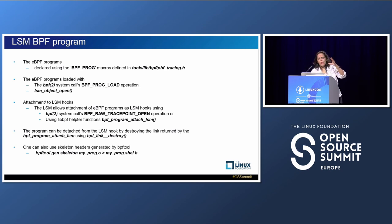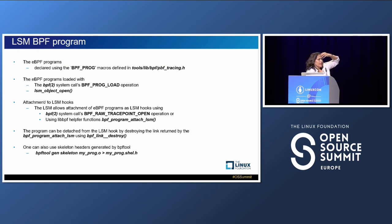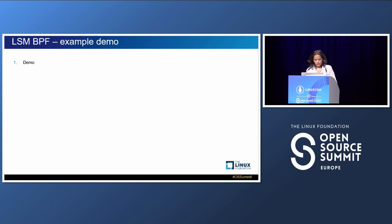A BPF implementation has two parts: one is the BPF program itself, and another is a loader application that does the work of loading the BPF program into kernel memory and attaching it to the different hooks. The attachment to the LSM hooks happens from the loader application through the BPF system call itself. The BPF system call does the work of loading the BPF program into memory and performing verification.